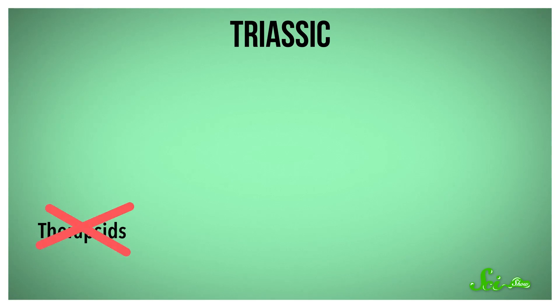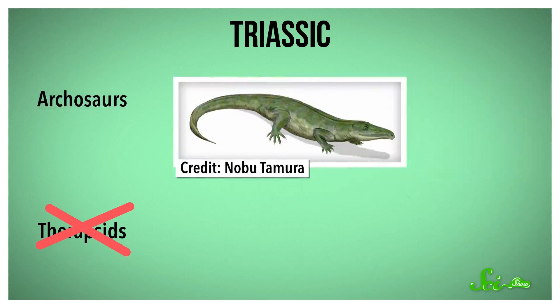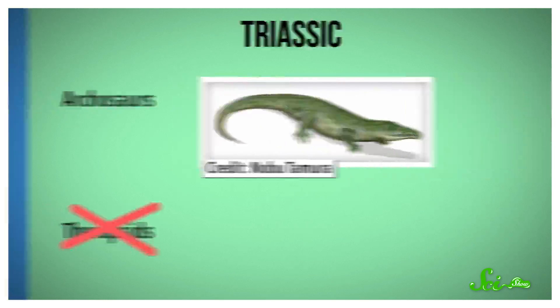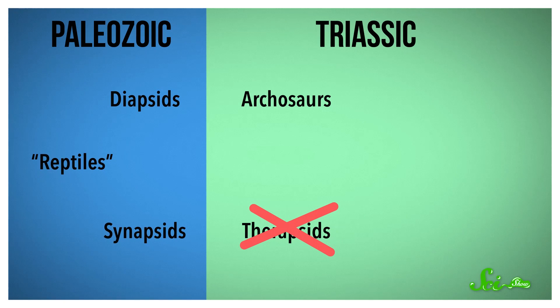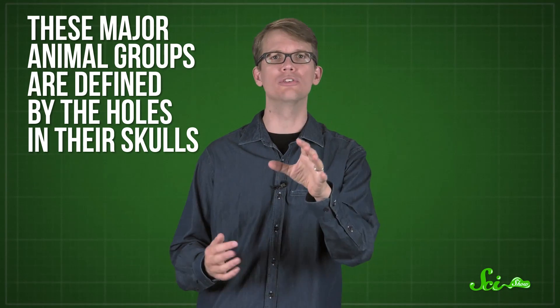The Therapsids were declining, but a new group of vertebrates was starting to take over — the archosaurs. Archosaurs descended from one of the earliest major groups of land vertebrates, the Diapsids, at the end of the Paleozoic. These major animal groups are defined by holes in their skulls, which attach to muscles and mean that big, heavy bones weigh a little less. It might seem like a strange way to tell these animals apart, but it's actually a very clear marker.